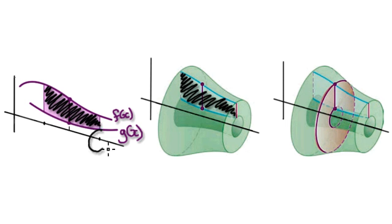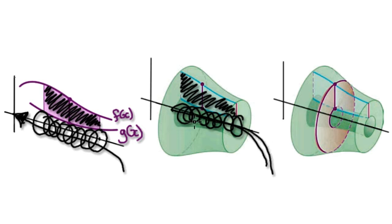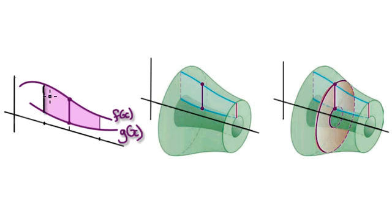So when you rotate this 360°, you're going to get a hole right in the middle here. If you rotate this 360°, you're going to get a hole right in the middle. So there's a hole right in the middle here, and on this diagram the hole is right here.